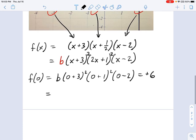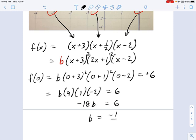Plus 6. So, this is going to be b times 9 times 1 times -2 equals 6. In other words, -18b equals 6. That means b equals -1/3.